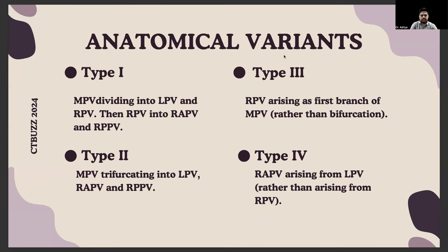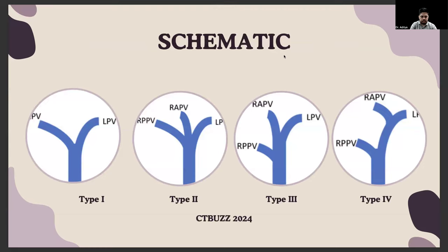The anatomical variants encountered were as follows. Type 1, the most common: main portal vein bifurcating into right portal vein and left portal vein, with the RPV further dividing into RAPV and RPPV. Type 2: main portal vein trifurcating into left portal vein, RAPV, and RPPV. Type 3: right portal vein arising as the first branch of the main portal vein. Type 4: right anterior portal vein arising from the left portal vein rather than the right portal vein. A schematic was shown illustrating all four anatomical variants.